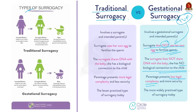Now, the second type is traditional surrogacy. In this type, the surrogate mother is impregnated with the sperm of the intended father artificially, making her both the genetic and gestational mother. The surrogate mother shares a genetic link with the child.